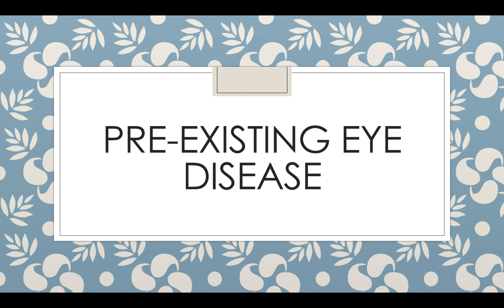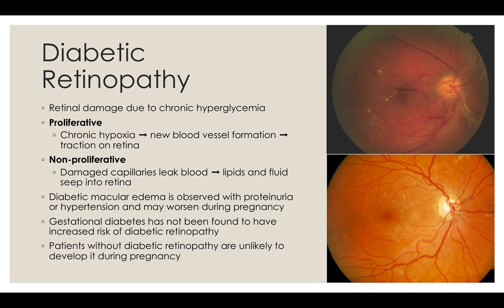We turn to the effect of pregnancy on pre-existing ocular disease. Pregnancy worsens many pre-existing eye diseases, such as glaucoma, pituitary adenoma, and meningioma. We'll focus on the highly prevalent diabetic retinopathy. The hyperglycemia of diabetes damages the retina, leading to diabetic retinopathy. There are two types: non-proliferative, in which lipids and fluids seep into the retina causing damage, and proliferative, in which new blood vessels form causing traction on the retina. On the right are two examples comparing and contrasting proliferative and non-proliferative diabetic retinopathy, respectively. Diabetic macular edema may also be observed with proteinuria or hypertension, and may worsen during pregnancy. Isolated gestational diabetes is unassociated with a risk of diabetic retinopathy.